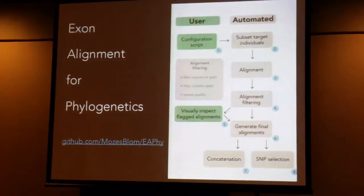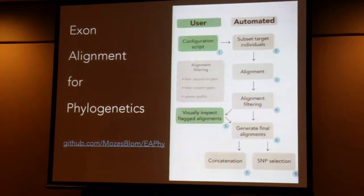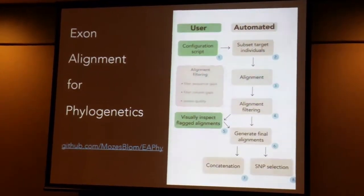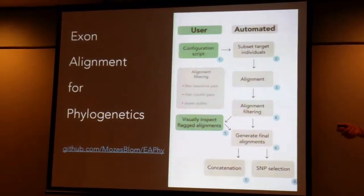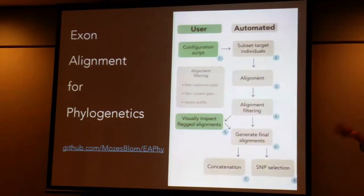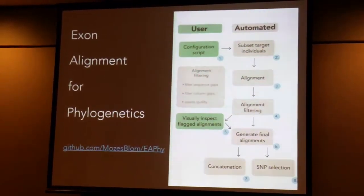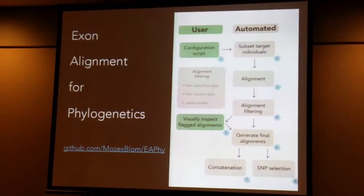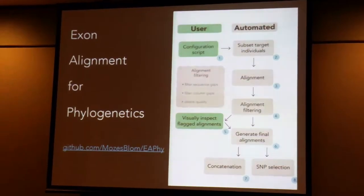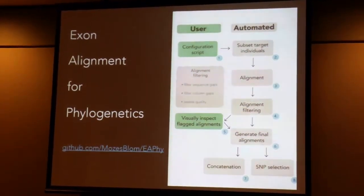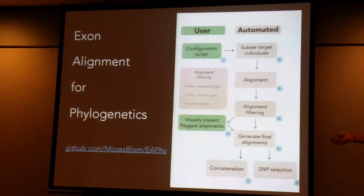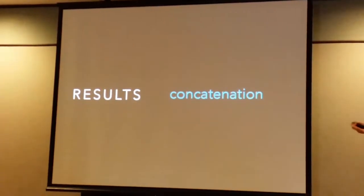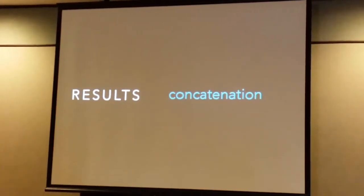Missing data is also an important part that might affect your species tree inference. This pipeline gives you output where it will also try to quantify the amount of missing data you have. So you can have a dataset with no missing data, 10% missing data, 20% missing data, and you can repeat your inferences based on these different datasets to see how much consistency there is between methods. The paper is currently in review, but you can already find the scripts on my GitHub. In this presentation, I've only used complete sequence data, so there's no missing data regarding species or within alignments.